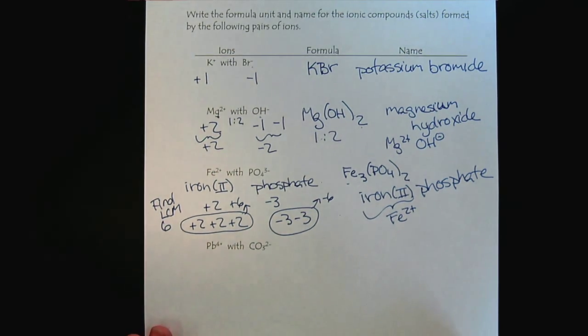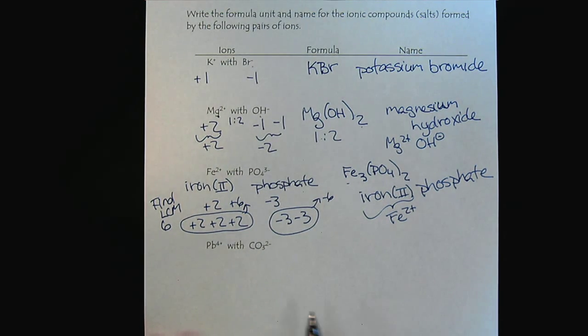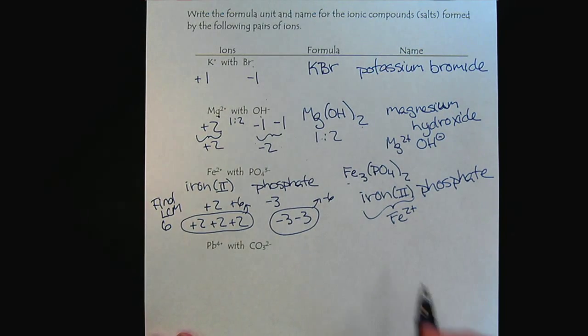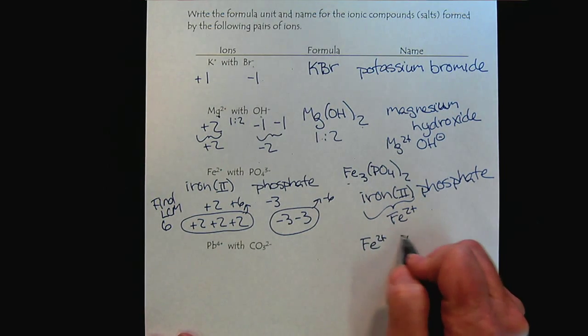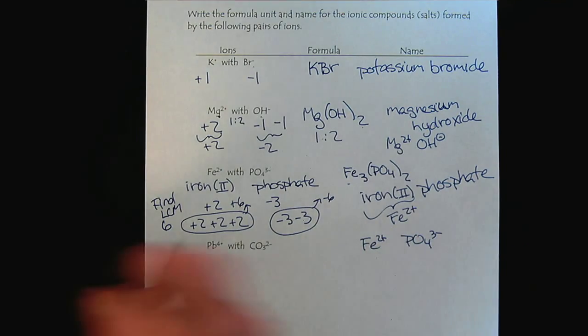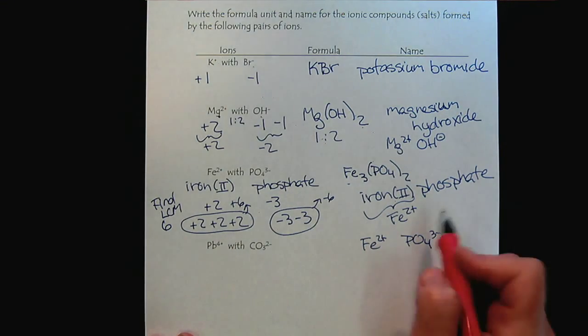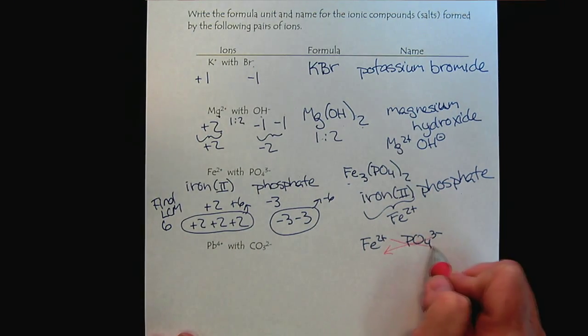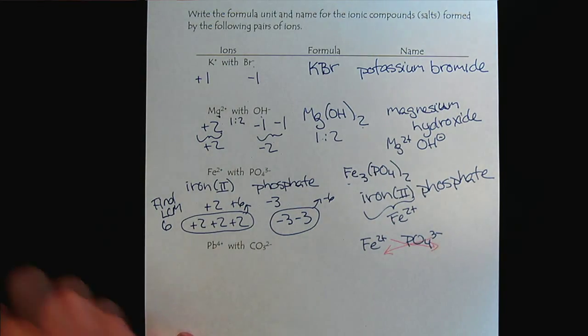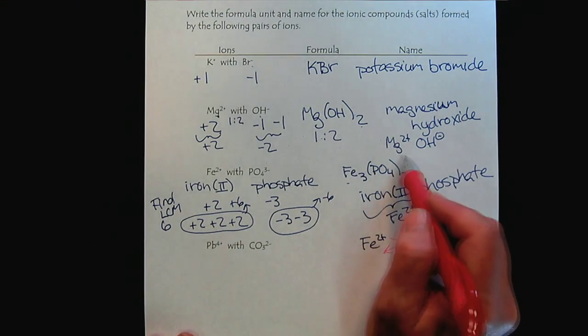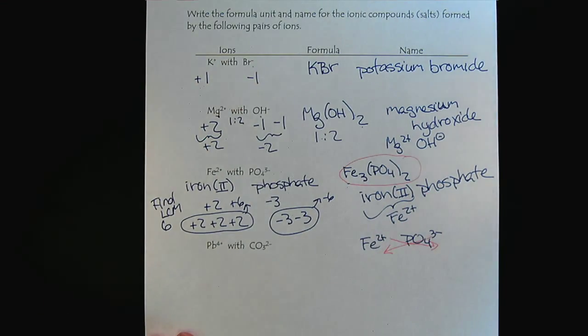Sometimes people like to use the criss-cross method. So, for example, with the iron 2 and the phosphate, we could criss-cross the charges over and get the answer that we see. And in many cases, the criss-cross method works great.